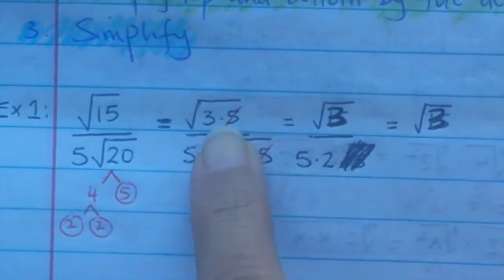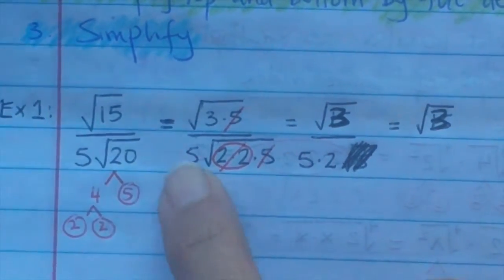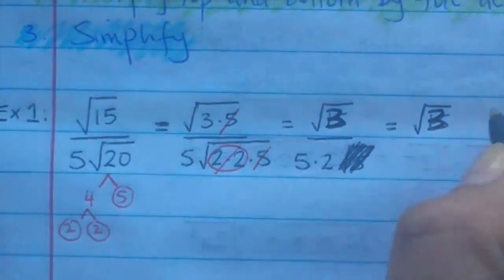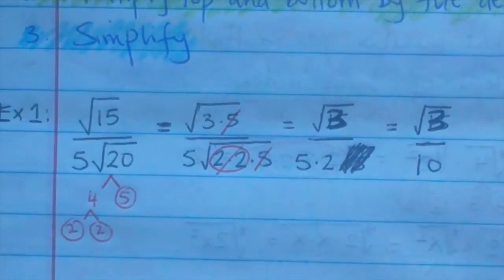So it's really going to be radical 3 over 10. There are two ways to simplify: you can take out books of pairs, and you can cancel what's on the top if it's also on the bottom.